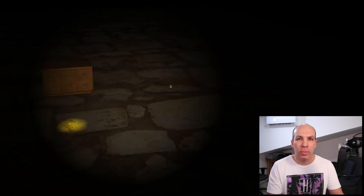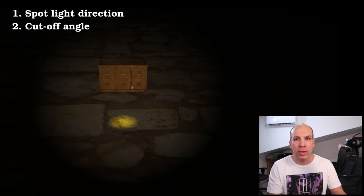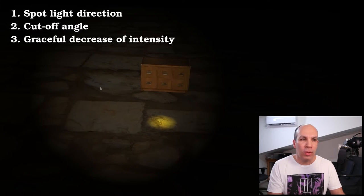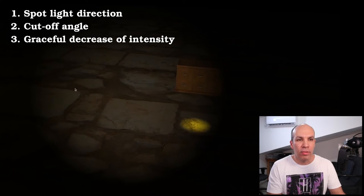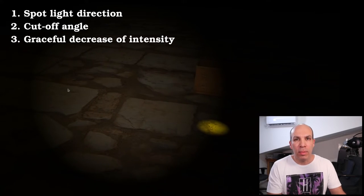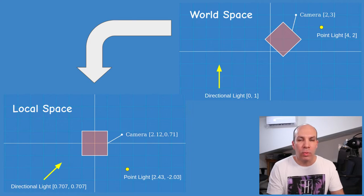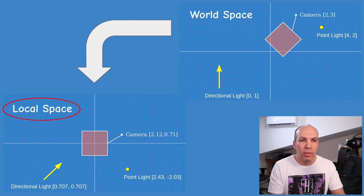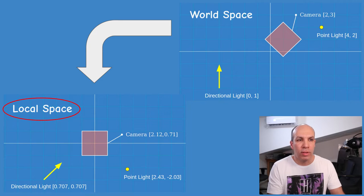These three elements — the spotlight direction, the cutoff angle, and the graceful decrease of light intensity — define the effect of the spotlight on the 3D scene. Let's see how to handle them mathematically. The method we've been developing over the course of the last few tutorials is to do the lighting calculations in local space.